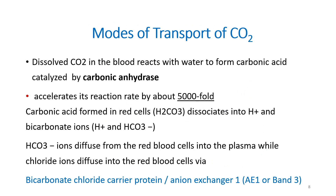To revise: dissolved carbon dioxide in the blood reacts with water to form carbonic acid, catalyzed by carbonic anhydrase, which accelerates the reaction around 5000-fold. The carbonic acid formed in red cells dissociates into H⁺ and bicarbonate ion. The bicarbonate ion diffuses from RBC to the plasma while chloride is exchanged for it via anion exchanger 1, and the hydrogen ion combines with hemoglobin. That covers the transport of carbon dioxide in the bicarbonate form, which is the major form of transport.